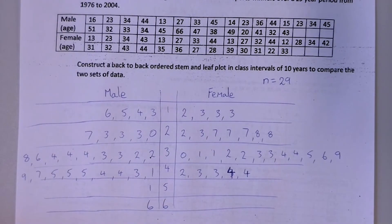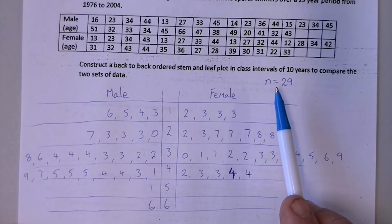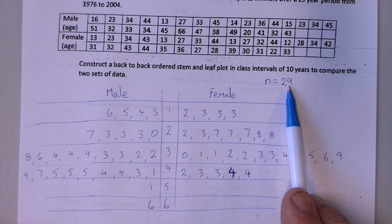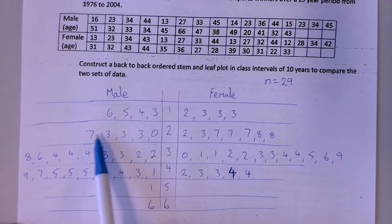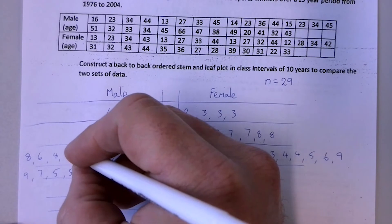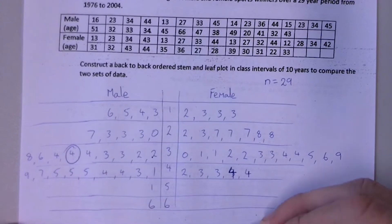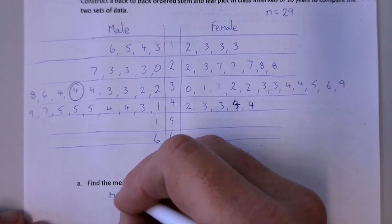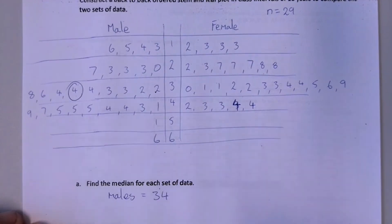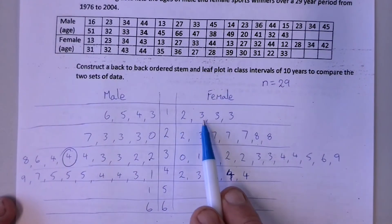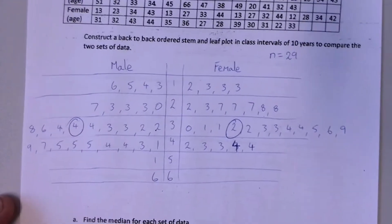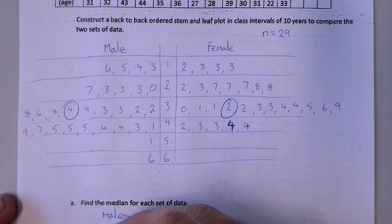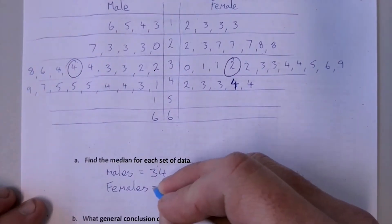And then to try and find the median of each set of data, what I do is I have a look at how many scores of each there were. So there was 29 females and 29 males. So in each instance I'm going to be looking for the 15th score. Because that's exactly halfway. So 1, 2, 3, 4, 5, 6, 7, 8, 9, 10, 11, 12, 13, 14, 15. So for males it's going to be the 34th. So for females it's going to be 1, 2, 3, 4, 5, 6, 7, 8, 9, 10, 11, 12, 13, 14, 15. So for females it will be 32.